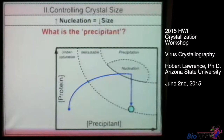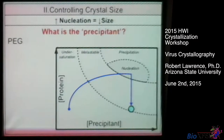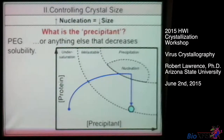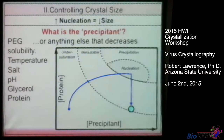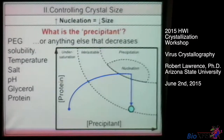I want to start with the question: what is the precipitant? When we talk about setting up crystal trays, we always include a precipitant, and the first answer most people would give is that the precipitant is PEG — which is, of course, correct. But I want to expand that definition to think of the precipitant as anything that decreases solubility, because that's essentially the job of the precipitant. You could add to that list: temperature, salt, pH, glycerol, and even the concentration of the protein itself. All of these things affect how nucleation will take place within the drop and the end outcome of the crystal.